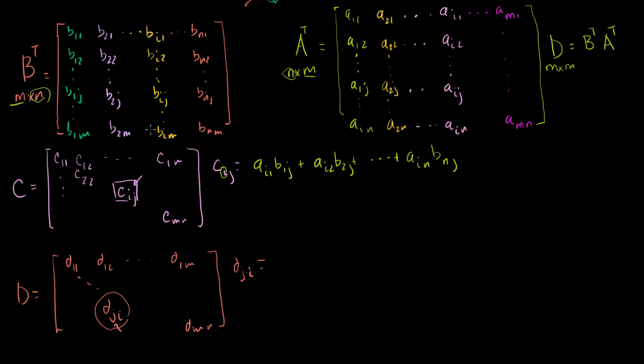It's going to be equal to, D is the product of these two guys. So to get the j-th row and i-th column entry here, we essentially take the dot product of the j-th row here. So we're going to take the dot product of the j-th row here, which is that right there, with the i-th column of A, which is that right there. So I'm going to take the dot product of that.